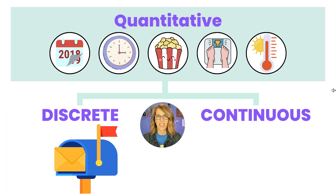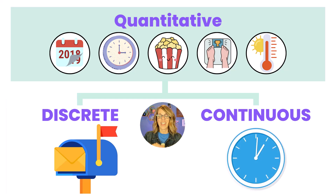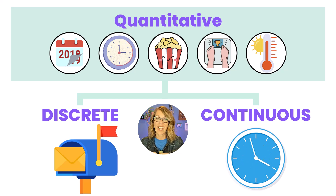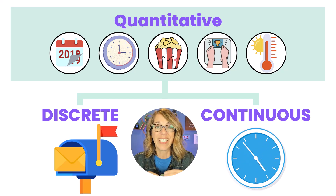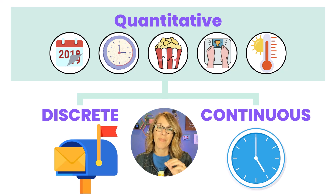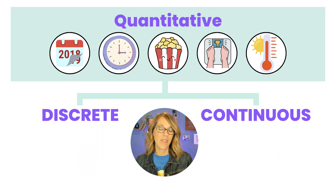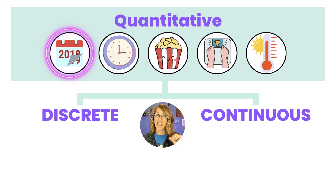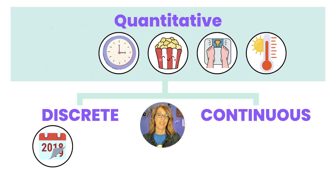Continuous variables happen in a smooth manner, just like the second hand on a clock. If I think about my age, I'm a teeny tiny bit older, continually aging — so that's a continuous variable. What about the variables from earlier? Years — as in what year is it — takes on values like 2018, 2019, 2020, but we wouldn't say the year is 2020.5. So years is a discrete variable.